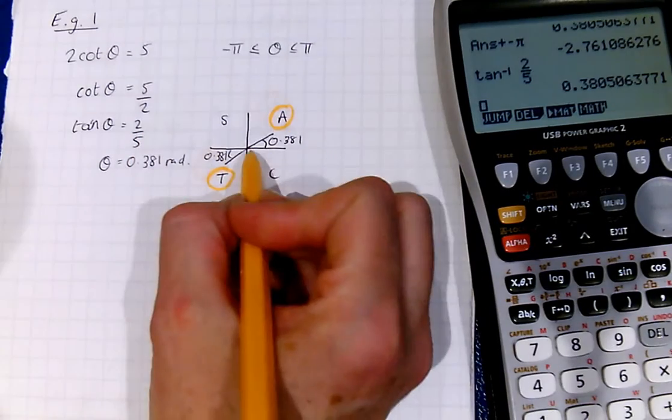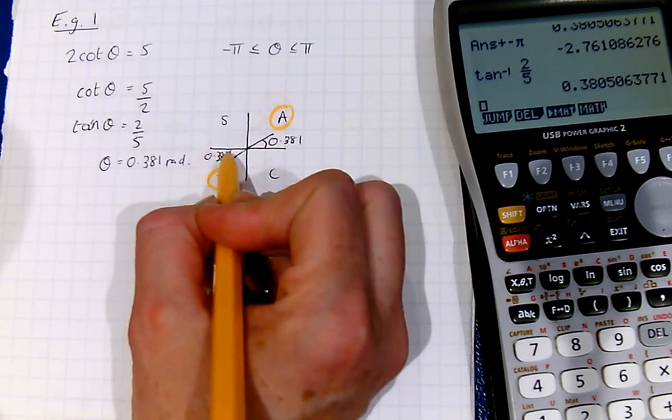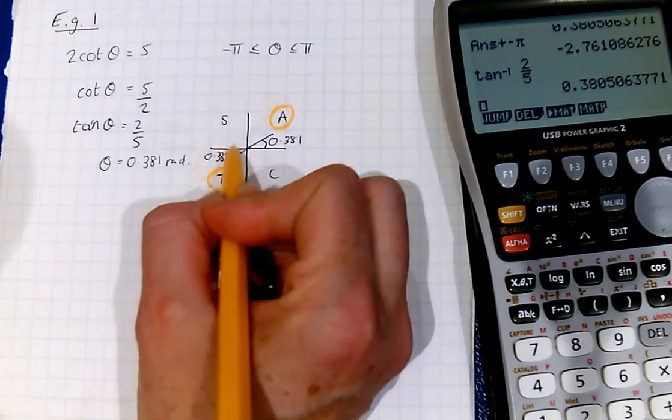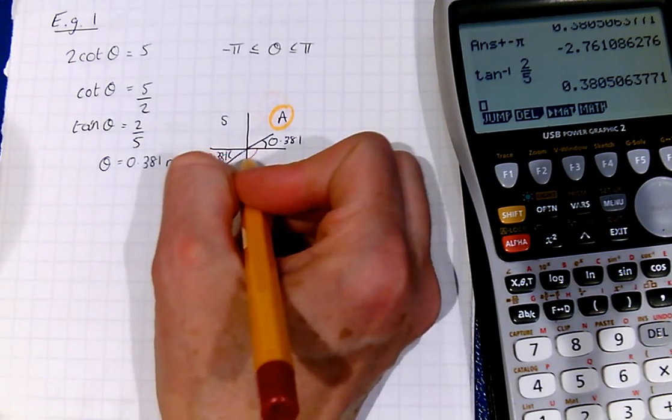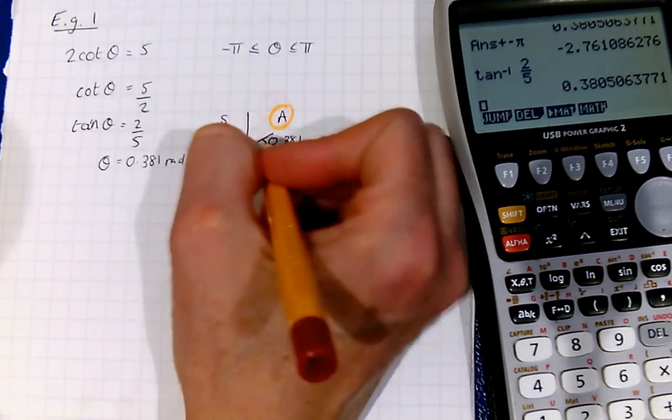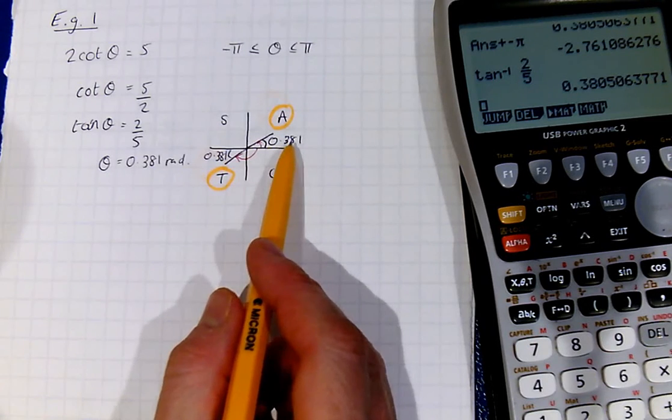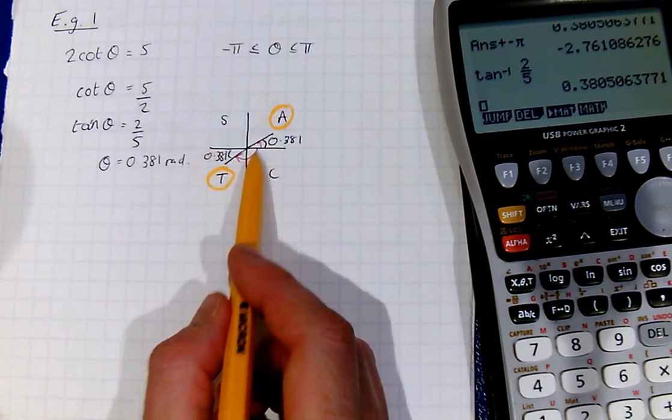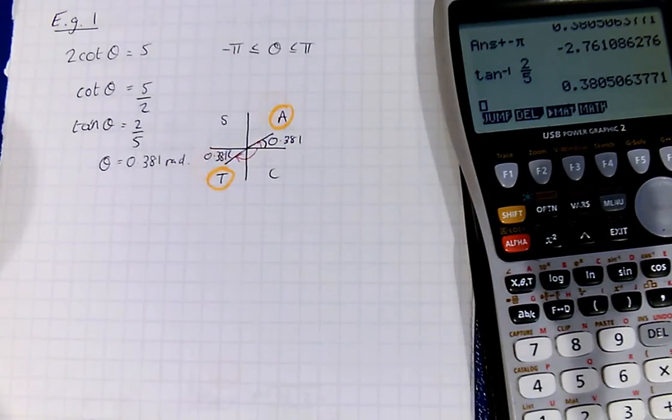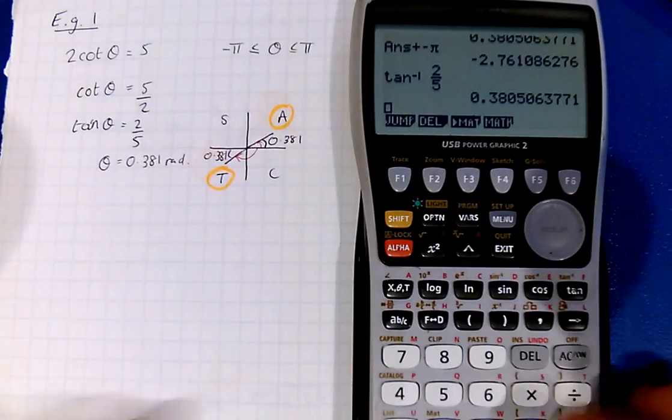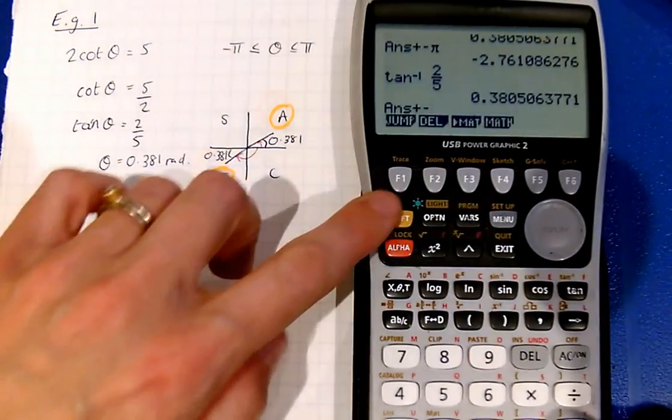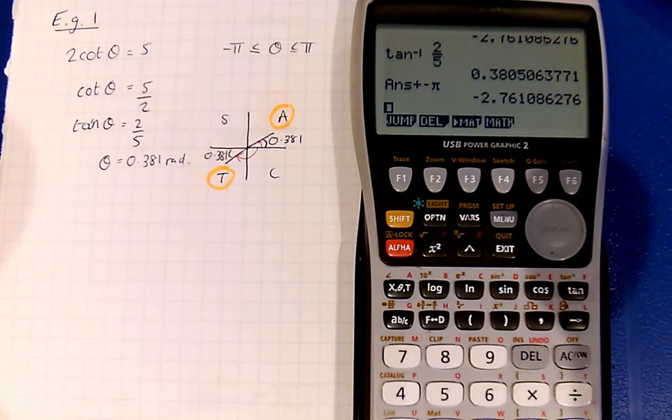Now we know that we're going from negative pi round to positive pi. So I need to find this negative angle and that positive angle. So we've already got the positive angle. To get this negative one, we do negative pi plus our 0.381. So we'll add negative pi, and that gives us negative 2.76.